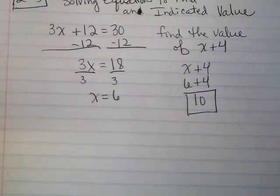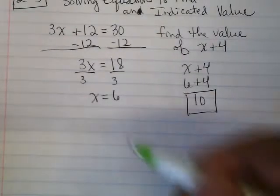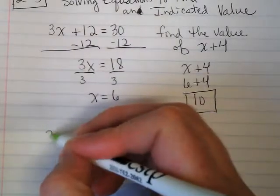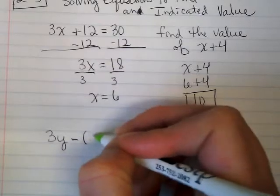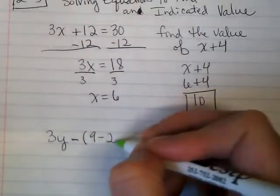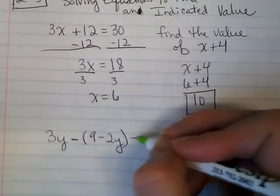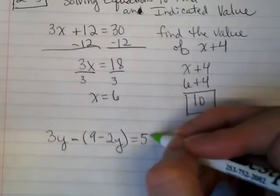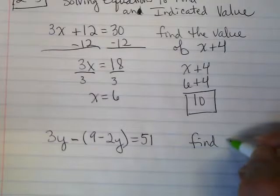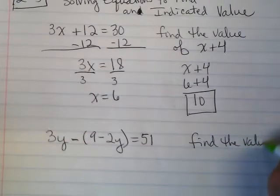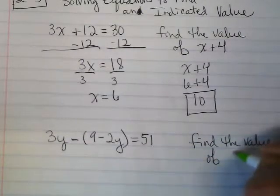Let's do another one. What if I have 3y minus, parentheses, 9 minus 2y equals 51. Find the value of 3y.